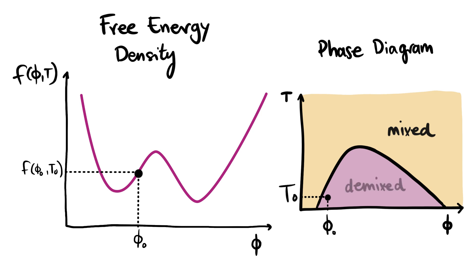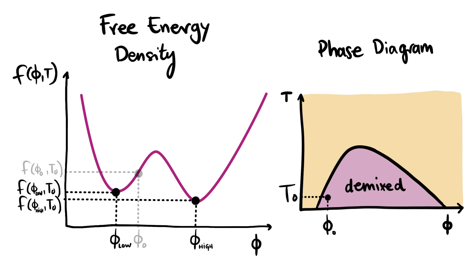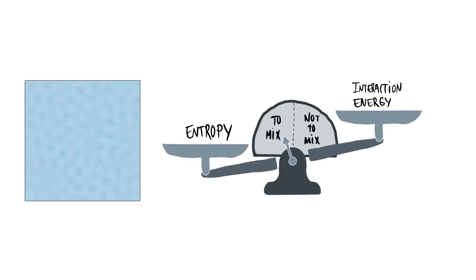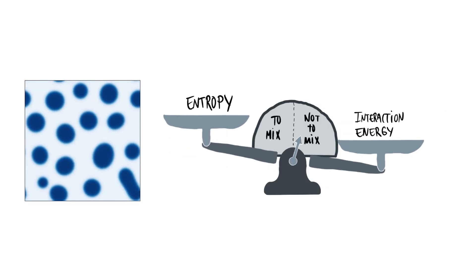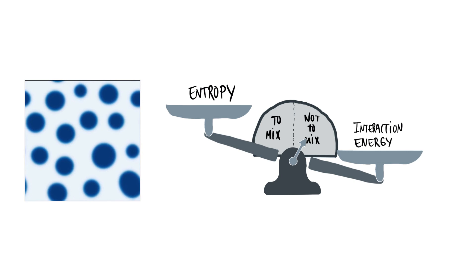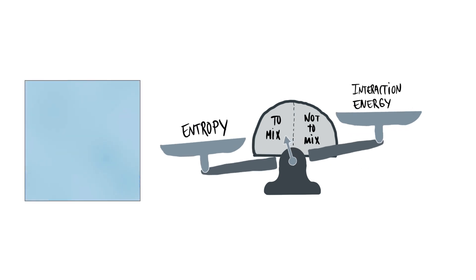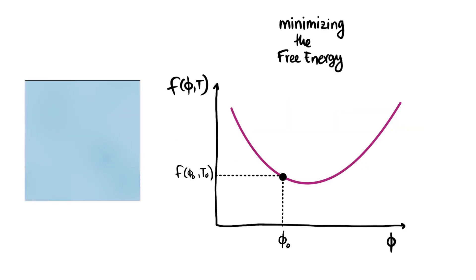In this case, the equilibrium state of the system is the mixed state. The equilibrium state is the one that settles the competition between entropy and interaction energy. Mathematically, this means minimizing the free energy.